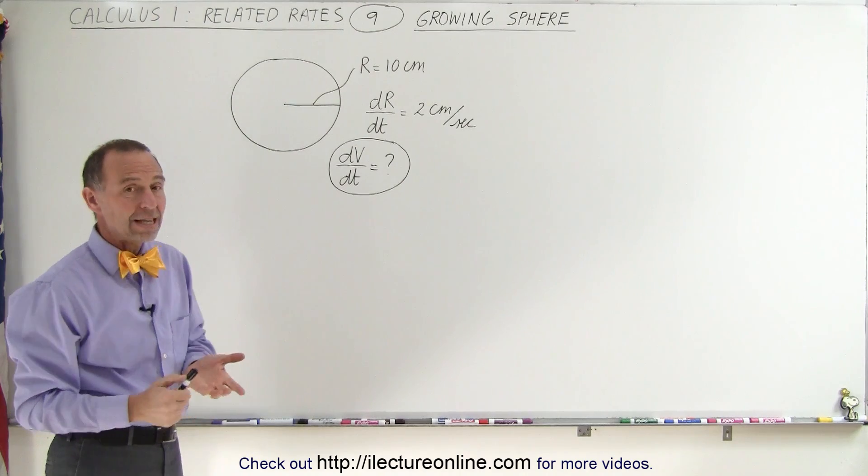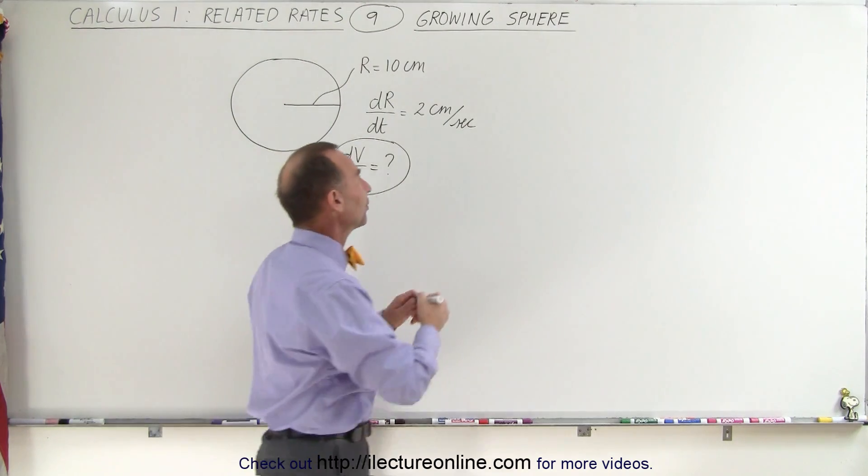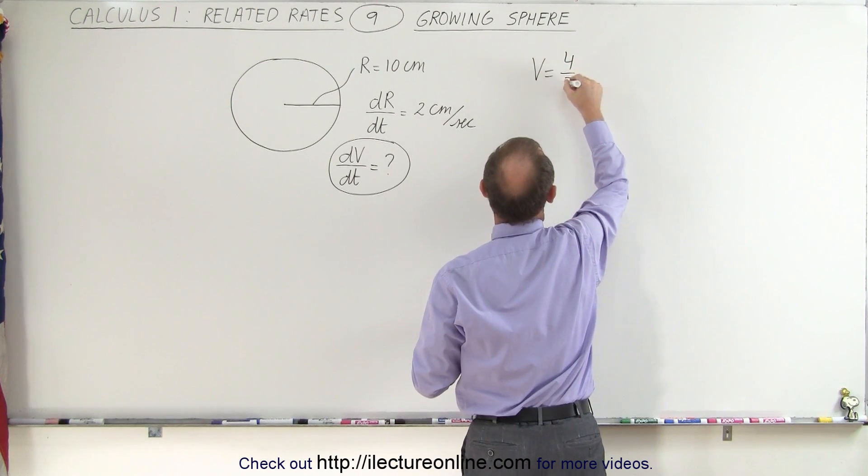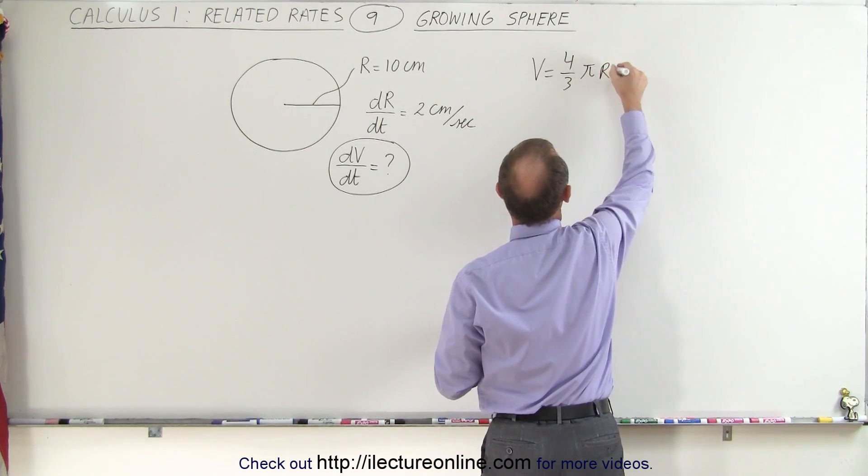What we need first is the equation for the volume of a sphere, and the volume is equal to 4 thirds pi times the radius cubed.